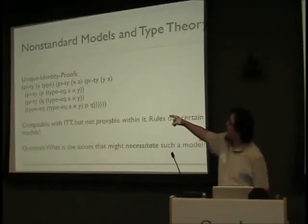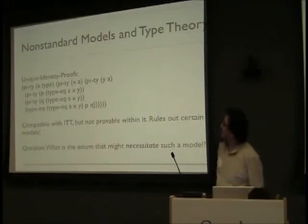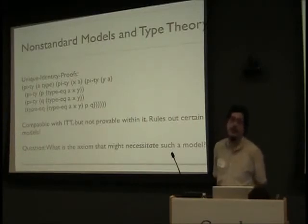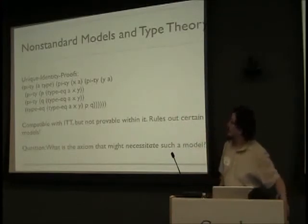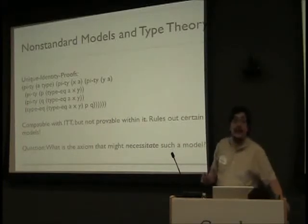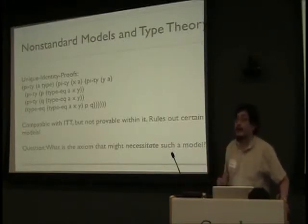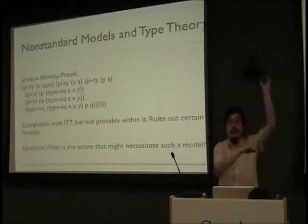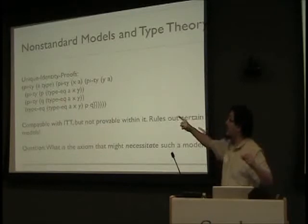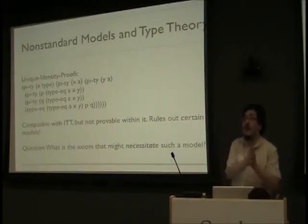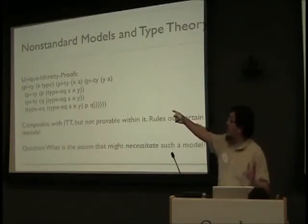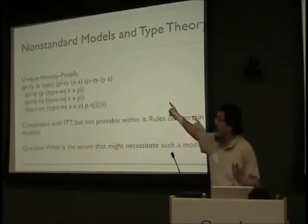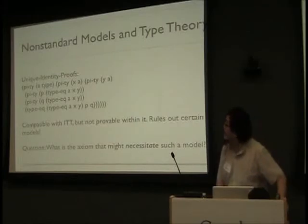Axiom K says: for all A of type type, for all x of type A, for all y of type A, for all P of equalities at that type between x and y, and all Q of equalities between that type x and y, I can give you a proof that those two equalities are equal. So it says: give me all this stuff, and I'll just give you a proof that they're all equal. That's compatible with intuitionistic type theory, but it's not provable within it. This is what Hofmann and Streicher realized — they gave an interpretation of type theory where this did not hold: the so-called groupoid interpretation.